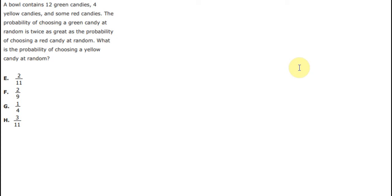Hello everybody! So today I will talk about SAT math. And here is the question: A bowl contains 12 green candies, 4 yellow candies, and some red candies. The probability of choosing a green candy at random is twice as great as the probability of choosing a red candy at random. What is the probability of choosing a yellow candy at random?